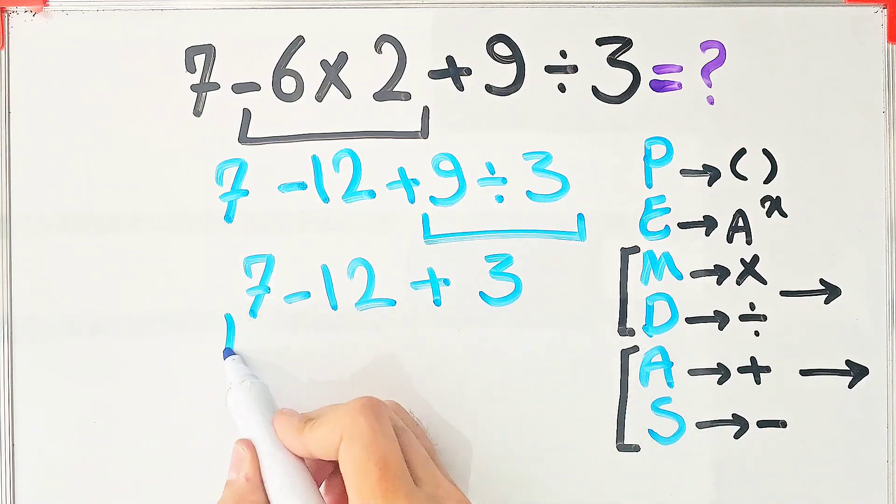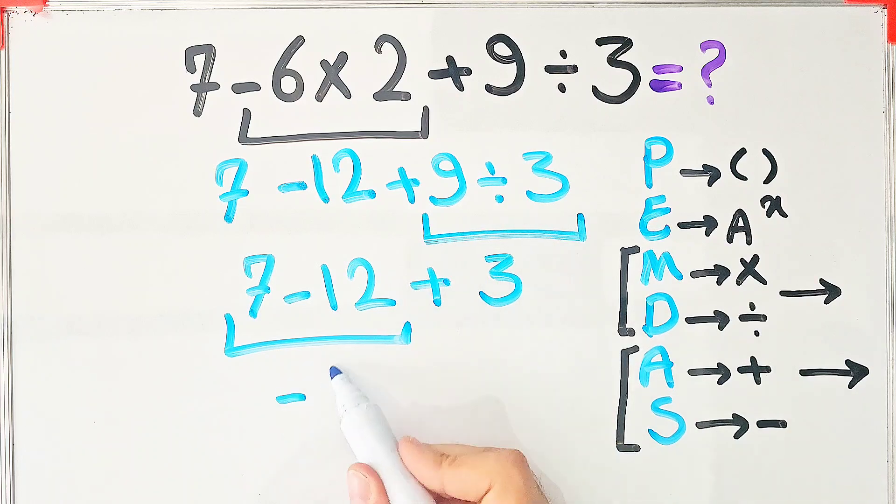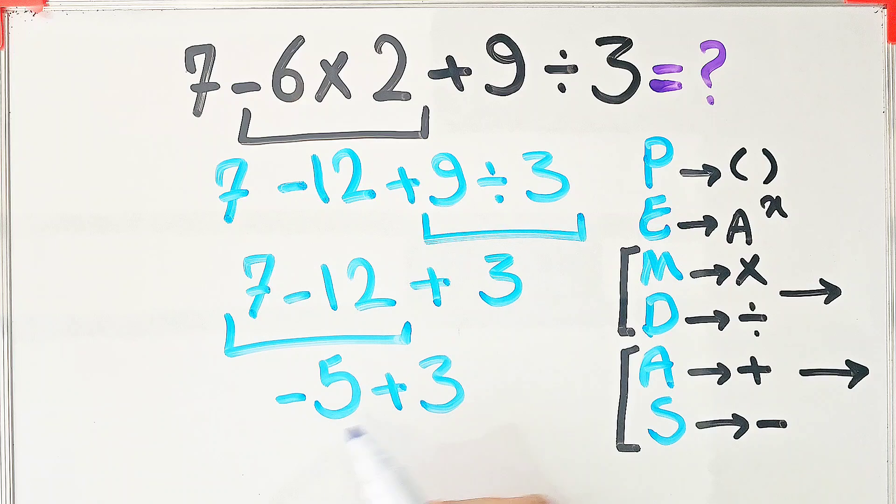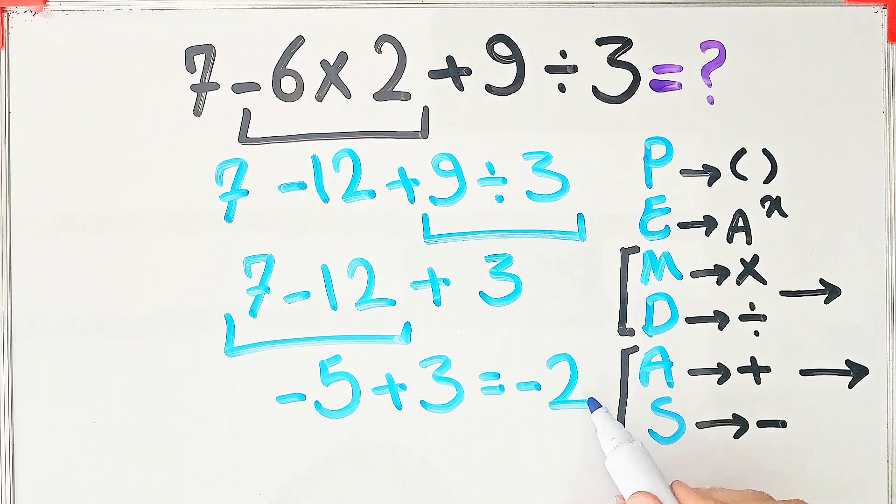7 minus 12 equals negative 5. And negative 5 plus 3 equals negative 2. The final answer of this question equals negative 2.